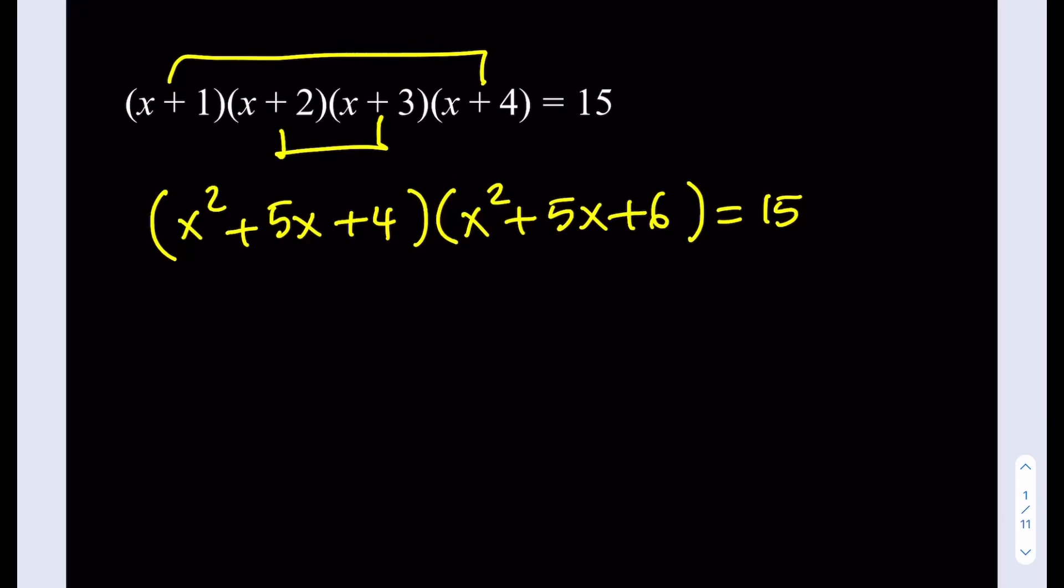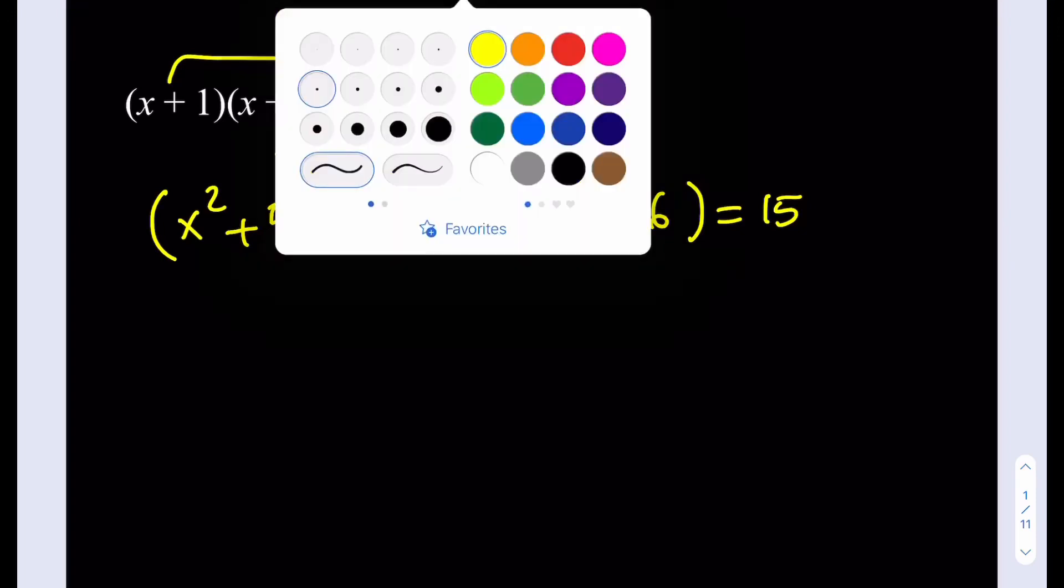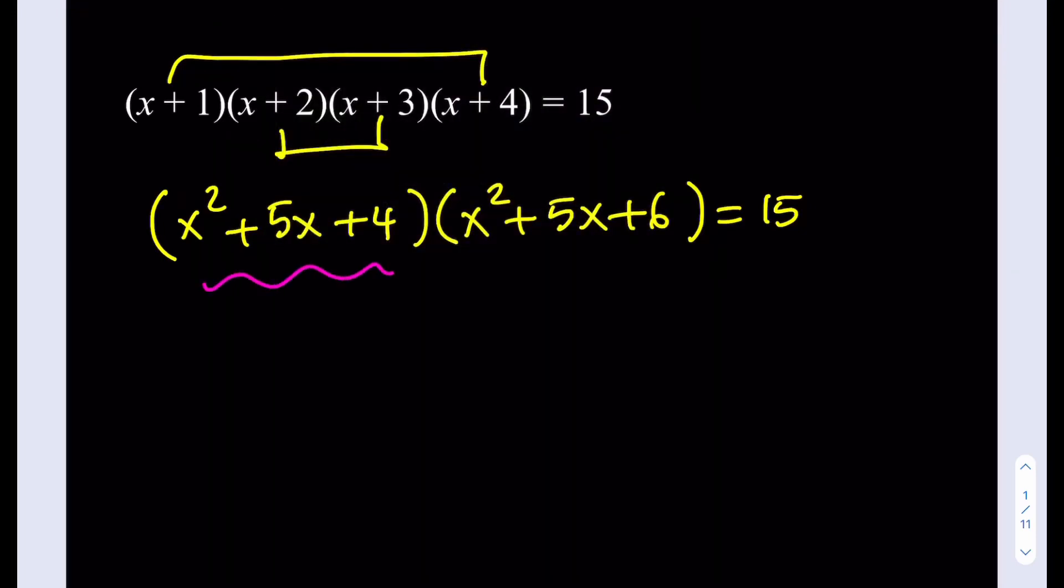So if I go ahead and use substitution here, I'm going to be getting something nice. So if I call this, for example, u, I didn't mean to make it a fraction, obviously. So if you make this u, then this will be u + 2. So u times (u + 2) is going to equal 15.